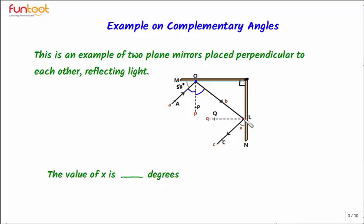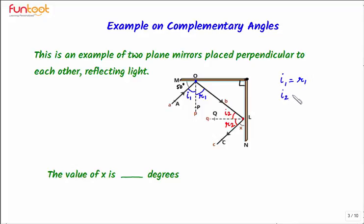Similarly, if we consider point L, then LQ is the normal here. This angle is the angle of incidence and this angle is the angle of reflection. Both these angles are also equal. Now the question is how do we connect the angle which the incident ray makes with the mirror — which is 50 degrees — with angle x, which the final ray makes with the mirror. We can call this angle I1 and this angle R1 at point O, and similarly I2 and R2 at point L. We can write that I1 = R1 and I2 = R2.